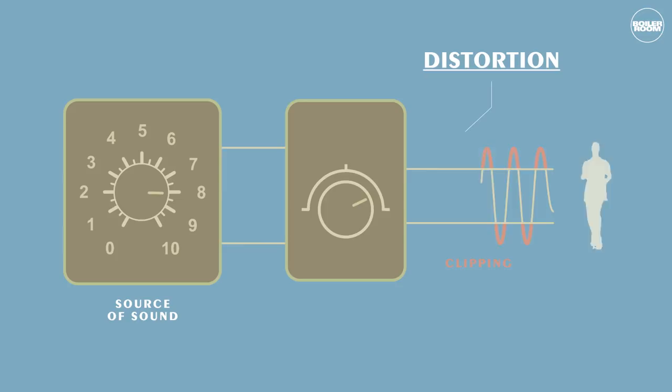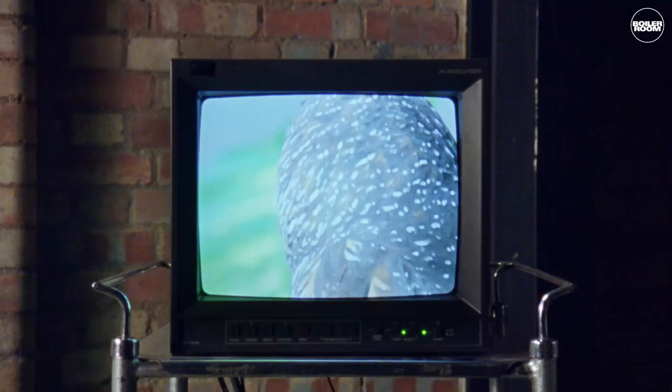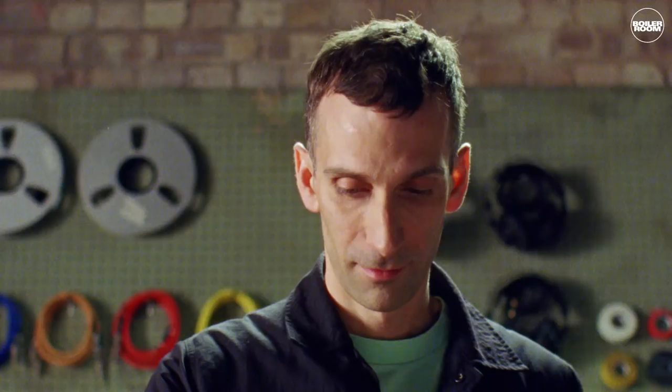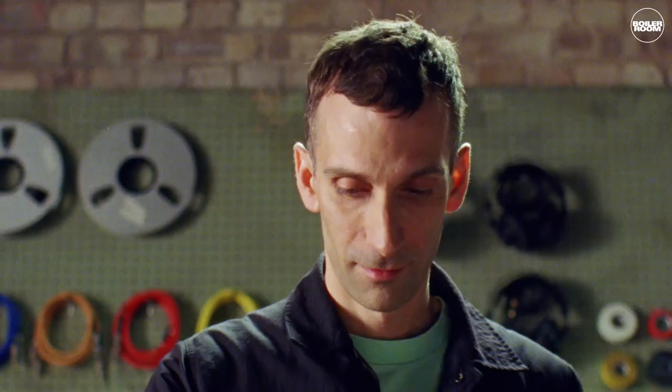Not Waving will now demonstrate this with a simple AB example. A — dry, without distortion. B — wet, with distortion.